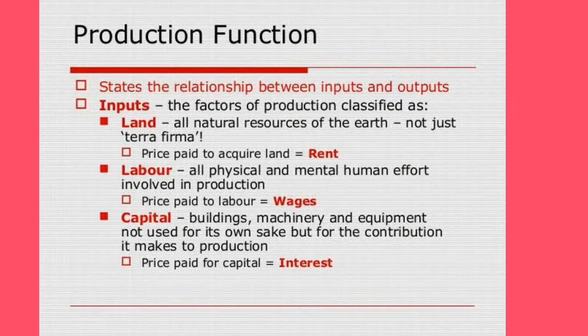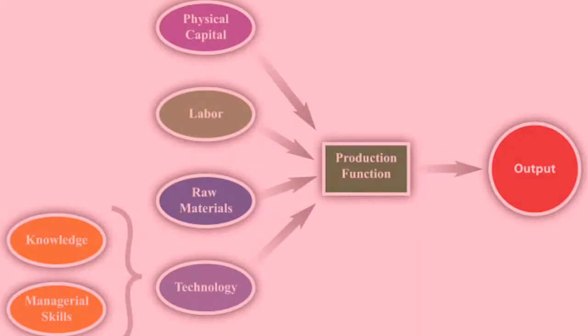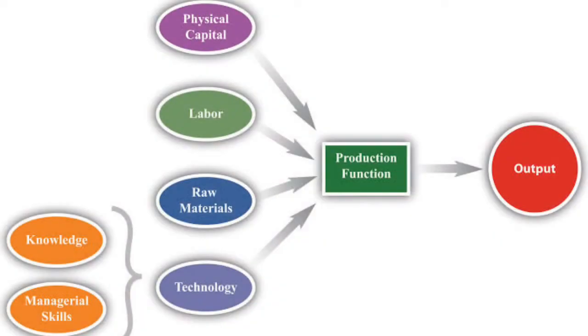The mathematical production function relationship is given as: Q is equal to F of N, L, K, O, T.